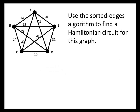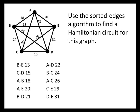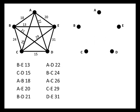So let's see how this works with this example. We're going to start by making our list of edges in order from cheapest to most expensive. The first edge on our list is the edge from B to E, which costs 13 — that's the cheapest edge. The next cheapest edge is from C to D, costing 15, and so on, all the way up to the most expensive edge, which is D to E, costing 31. We're going to draw a separate graph with no edges — just the five points A, B, C, D, and E — and add edges one at a time until we have a Hamiltonian circuit.